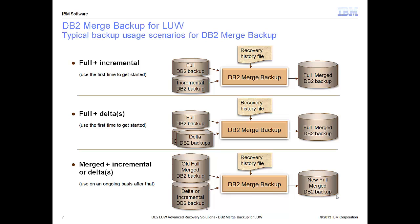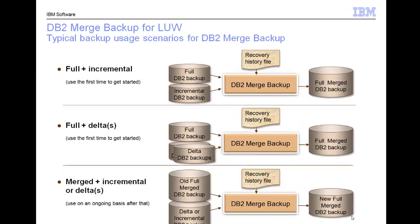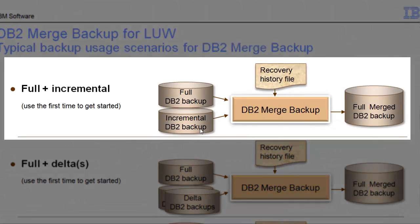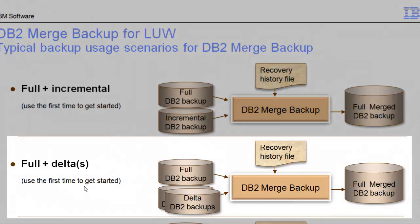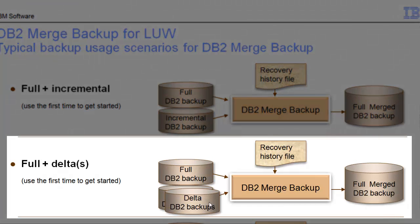So how does it work? Well, first let's picture the incremental scenario. We would take the full backup and the incremental backup, and Merge Backup would use the recovery history file to see which ones are the latest and produce a new full merge backup using the two files. The DB2 engine is not engaged — it's simply a matter of splicing those two files together. In the case of deltas, it would take the full backup and any number of the latest deltas, use the recovery history file to find all the rest of the deltas and the full, and put those files together in a new full merge backup.